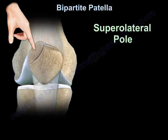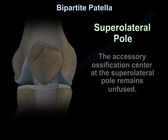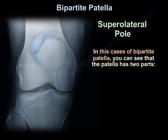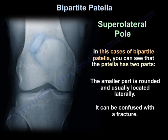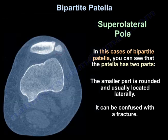Here is an example of bipartite patella in the superolateral pole. The accessory ossification center at the superolateral pole remains unfused. You can see the patella has two parts; the smaller part is rounded and usually located laterally, and it can be confused with a fracture.